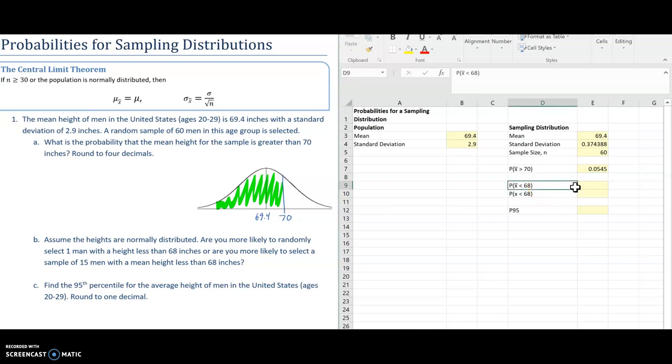So that one is going to be right here. That's the probability that x bar is less than 68 for a sample of 15. So I'm going to change this to 15 since my sample size changed. And I'm not going to worry about what happened here. I'm just going to focus on this part B here.